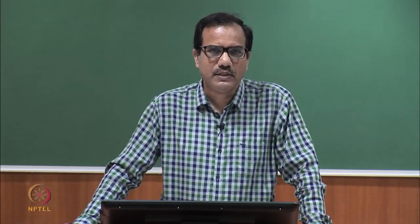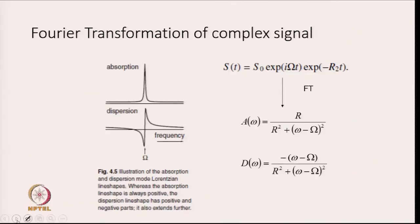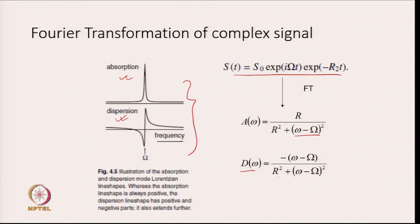If we do Fourier transformation of the FID, we get two different peaks: one is called absorption and the second is dispersion. The absorption A(omega) is equal to R divided by R squared plus (omega minus capital Omega) squared, whereas dispersion D(omega) is given by minus (omega minus capital Omega) divided by R squared plus (omega minus capital Omega) squared. Both have a Lorentzian line shape. The absorption line shape is always positive, whereas the dispersion line shape has positive and negative parts.